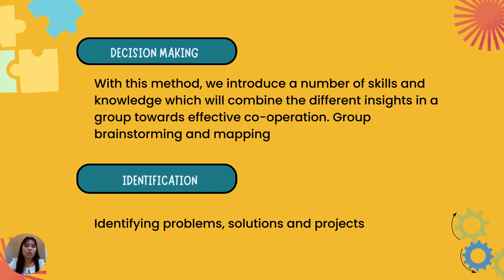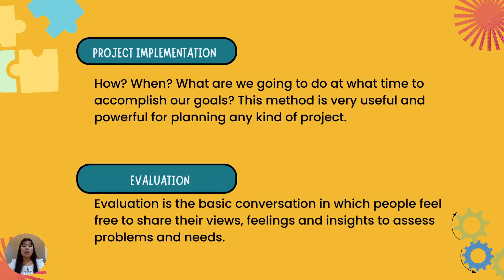Next is identification. This is a very useful method where you assess problems and needs, find and identify solutions for your project's problems, and formulate project tasks and responsibilities. It is also very helpful when managing and running a project. Project implementation answers how, when, and what you are going to do to accomplish your goals, and is very useful for planning any kind of project.